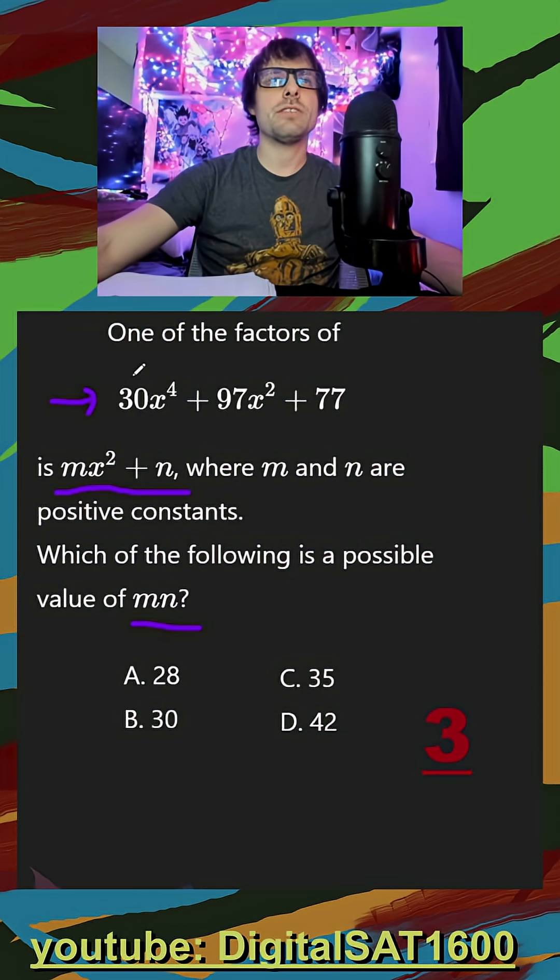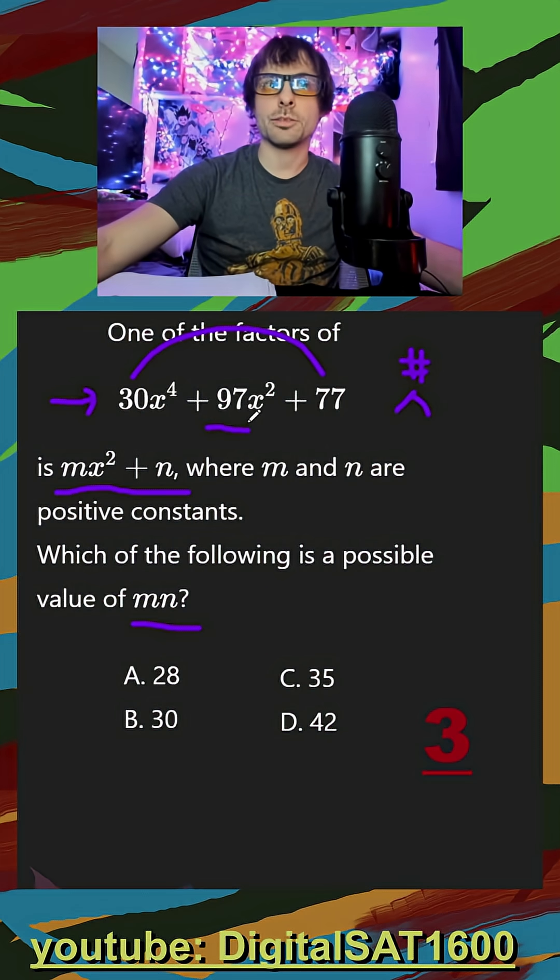I'm thinking, if I multiply my a and c values, I'll get a number that has two factors which add to 97. I can do factor by grouping and see what my m and n values are.